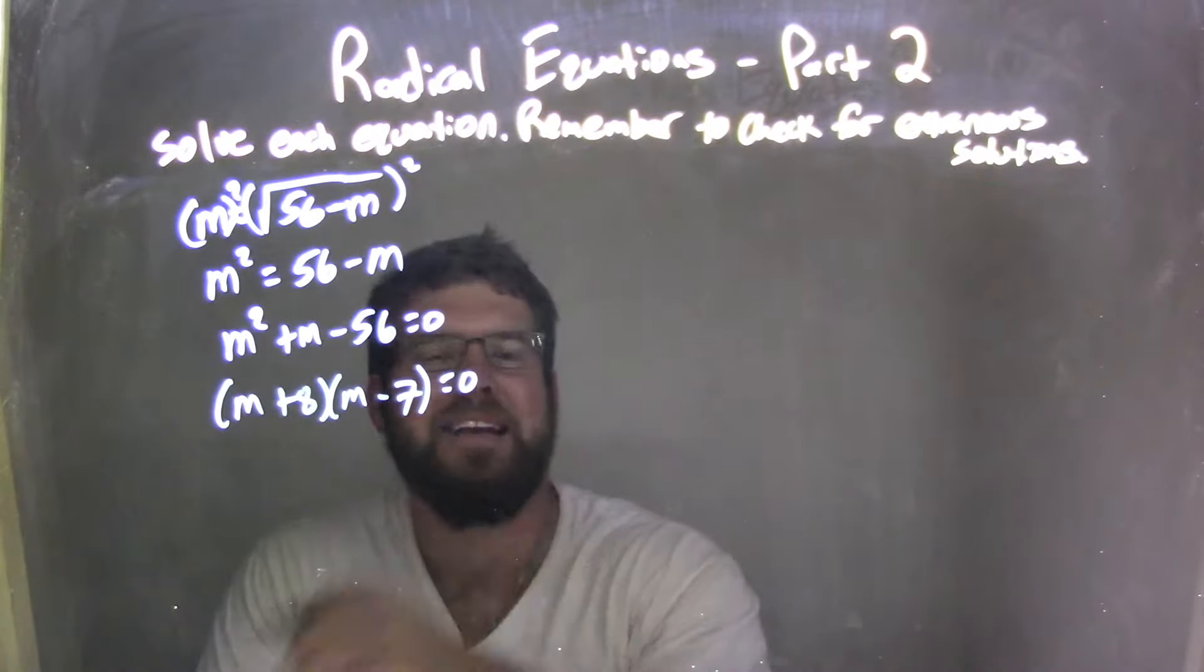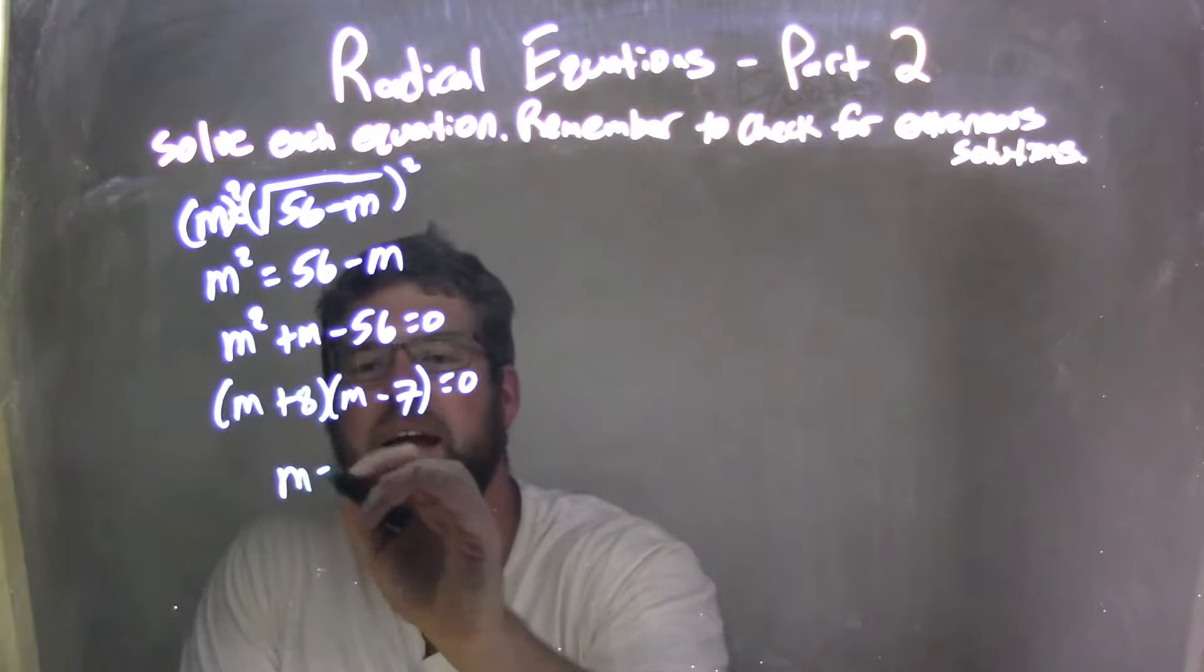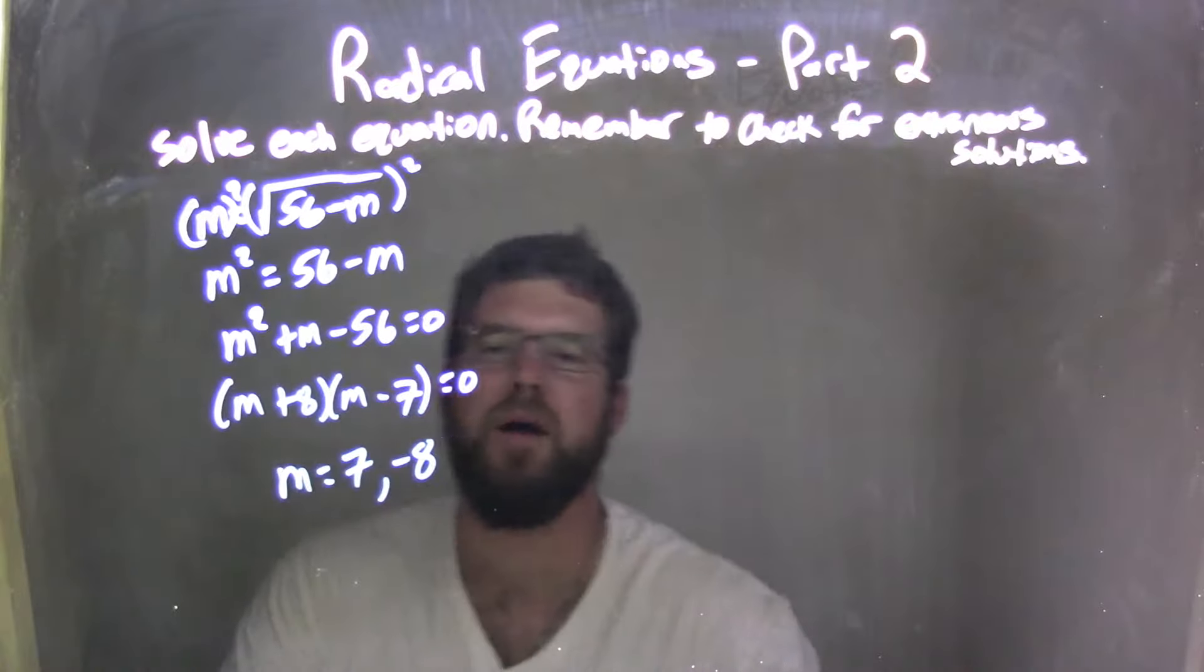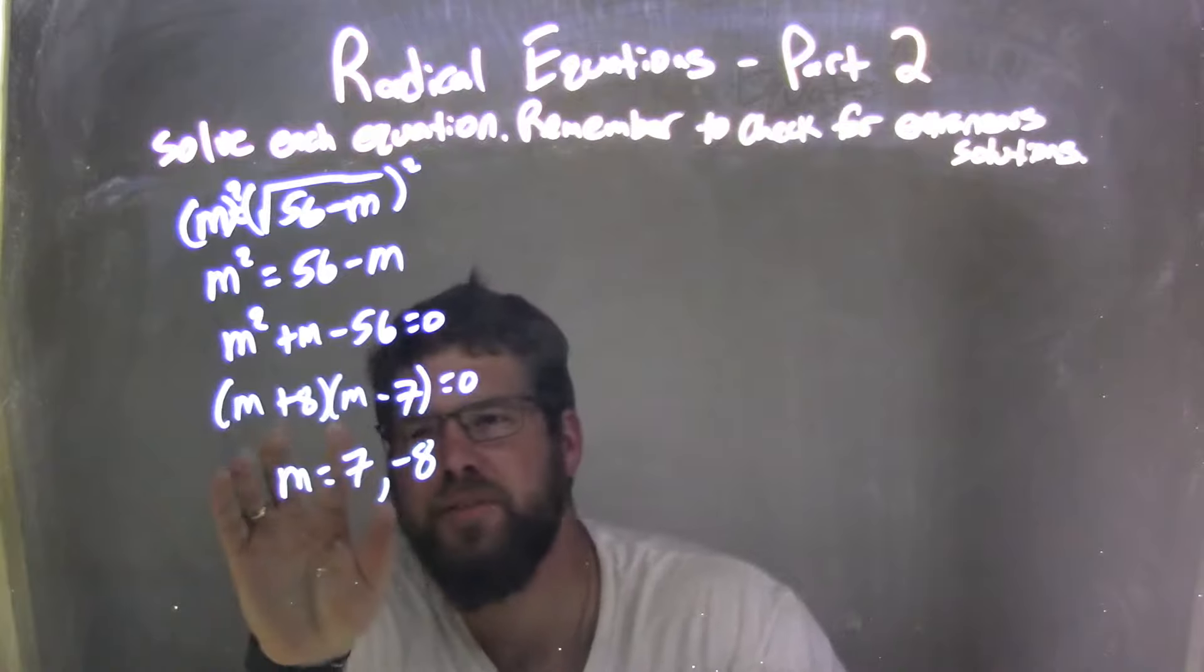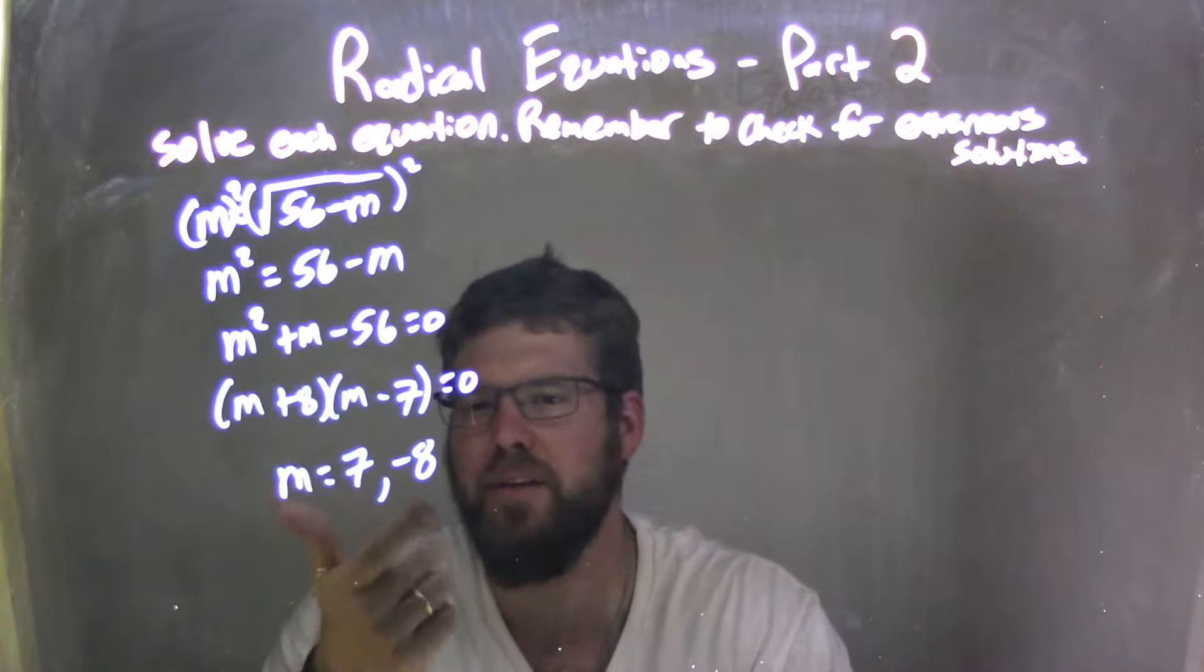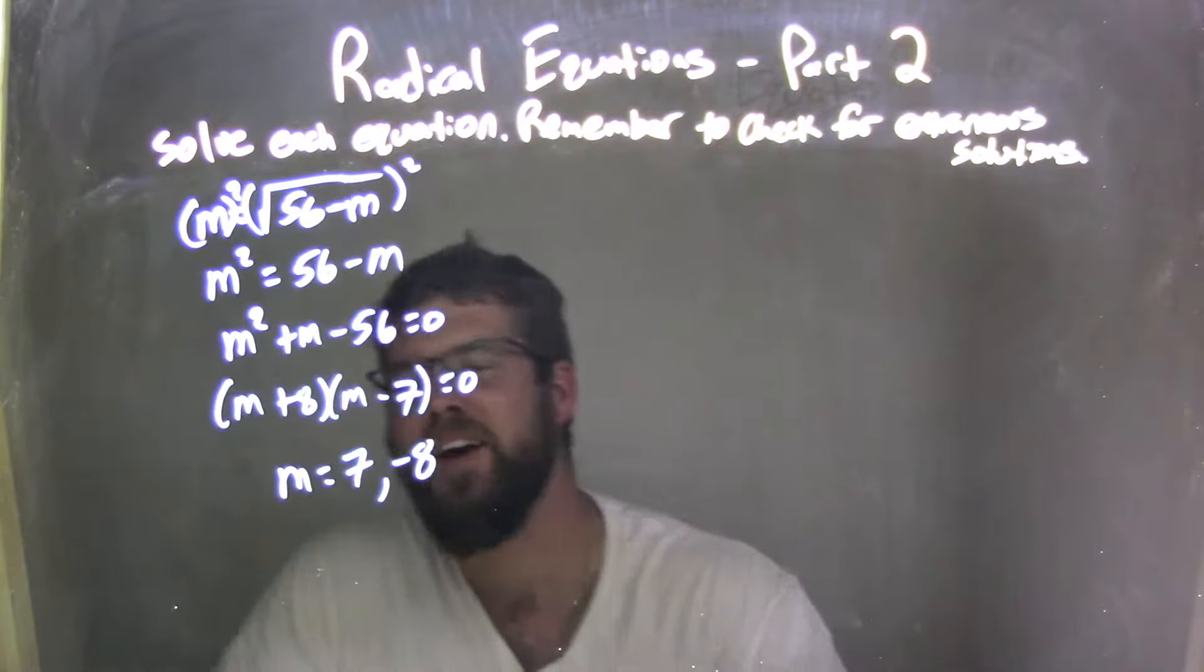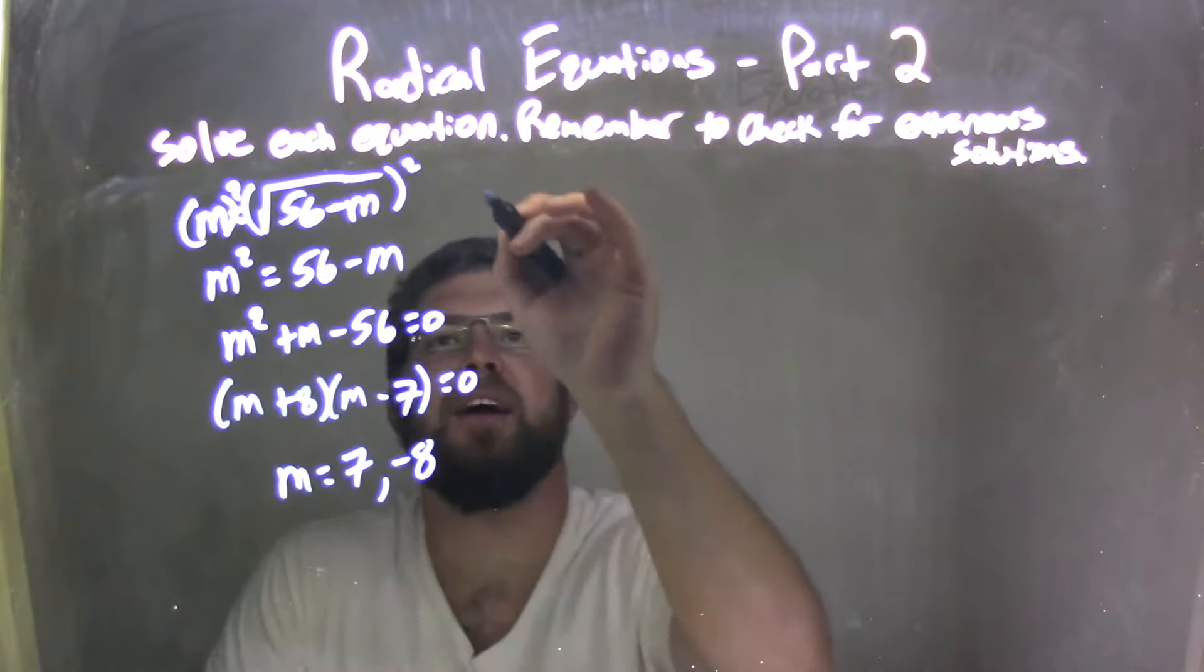So we have m equals positive 8 and negative 7. From there, I know I can set it as m equals positive 7 and negative 8, flipping it around there. What we need to do is you set both parts equal to 0 and solve it. When it's kind of this simple, it's just the opposite of what's there written. So we have m equals 7 and negative 8. Let's check it because we got to see if any of these bad boys are extraneous.